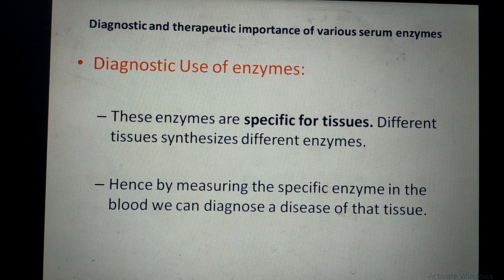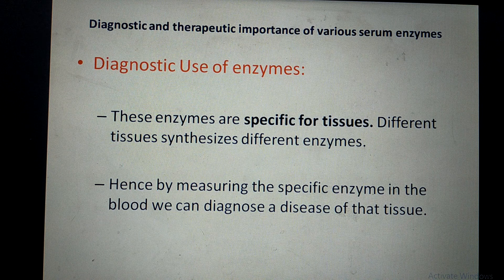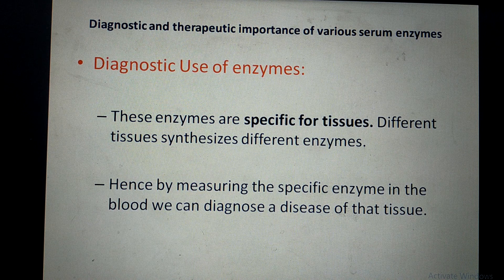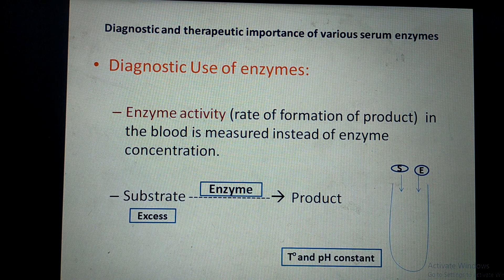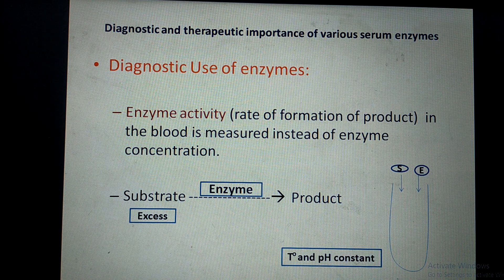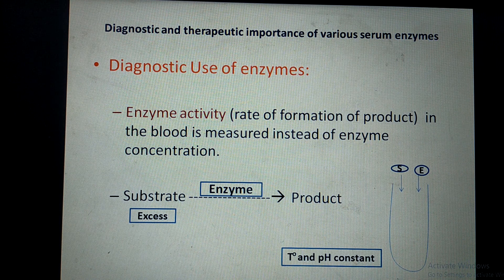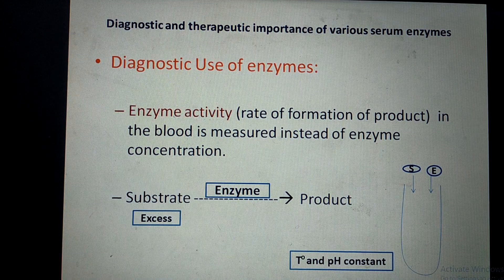Enzymes are very specific for tissues. For example, if a particular enzyme A is synthesized by a particular tissue B, then if the level of enzyme A increases in the blood, you can conclude that tissue B has some disease. By measuring specific enzymes in the blood we can diagnose disease of that tissue. One important point is that enzymes are present in blood in very small quantities — only in nanograms or picograms.